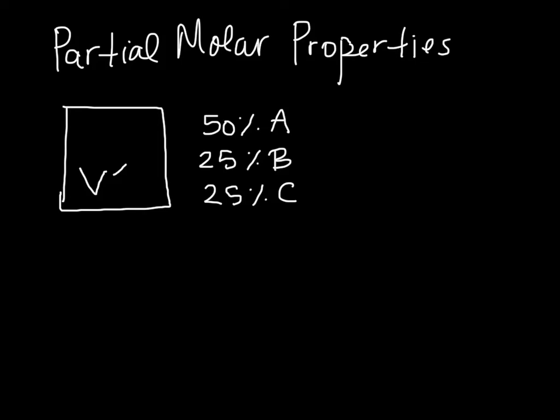Now, the question is, how much of the volume of this system do we attribute to A, how much of the volume do we attribute to B, and how much of the volume do we attribute to C? So, is it just 50% A, 25% B, and 25% C, or not?